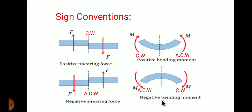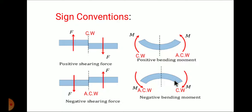Now we will see when to consider positive bending moment and when to consider negative bending moment. Positive bending moment is also called sagging and negative bending moment is called hogging. The simple way to remember: positive bending moment is how the beam will bend - it will look like a smiley face. If it is a smiley face, take positive bending moment; if it is a dull face, take negative bending moment.